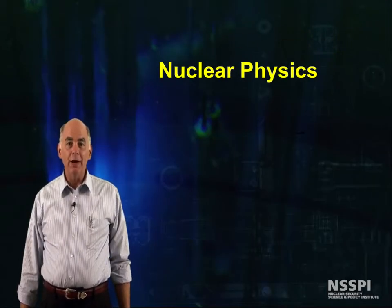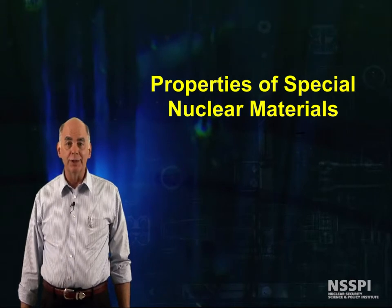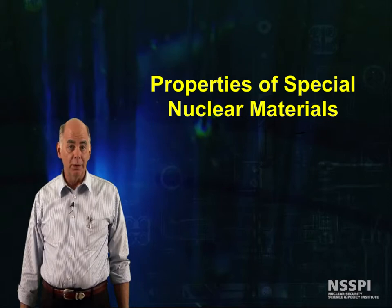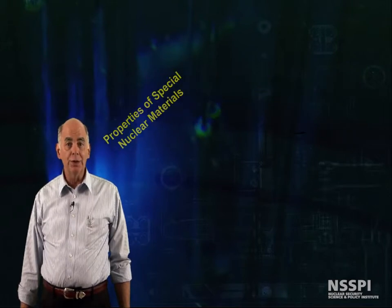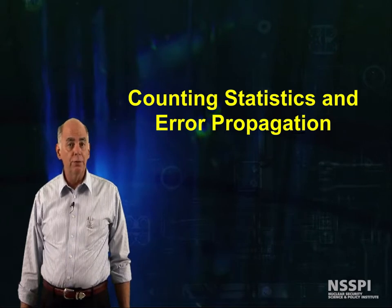Okay, we've done a flying review of nuclear physics. We've looked at properties of the special nuclear materials, particularly for the actinides that we want to measure, and we're just about ready to jump into detector theory and how the various detectors work. But first, we need to take a brief detour through statistics.